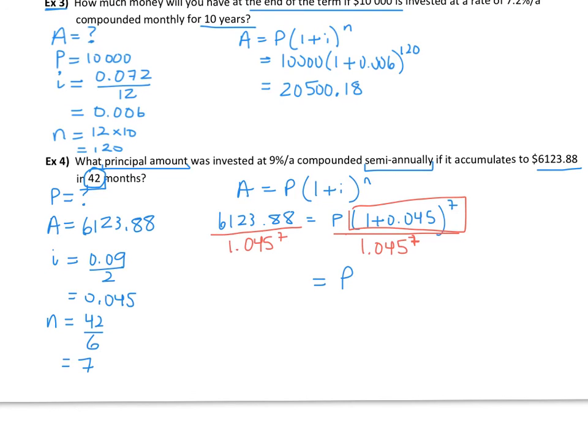So 6123.88 divided by 1.045 to the exponent of 7. And that gives me $4,500. So we started with an investment of $4,500. And that rounds to like even $4,500.